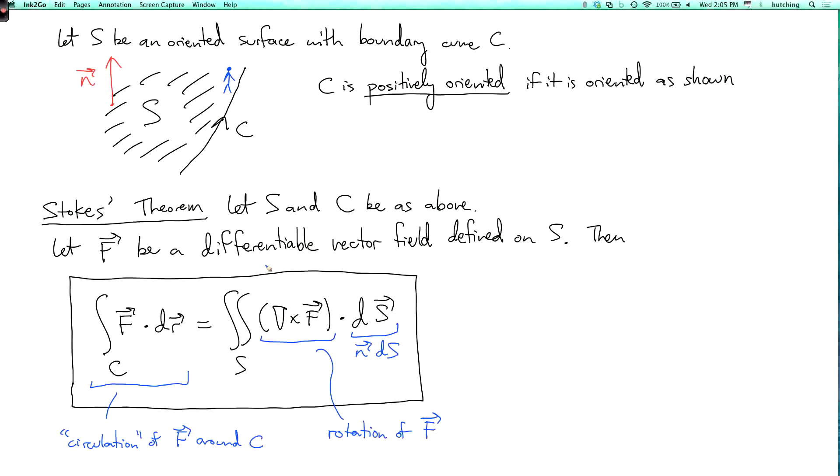So what this formula says is if you take this sort of rotation which is tangential to the surface and integrate it over the whole surface, then you get the net rotation around the boundary or circulation around the boundary of the surface.